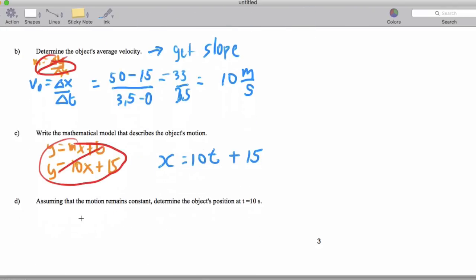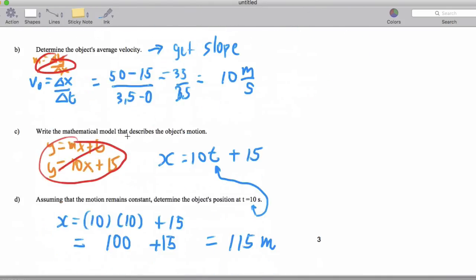Why would we do this? Because it says, assuming the motion remains constant, determine the object's position at 10 seconds. So check this out. We plug in t is 10 into this formula up here. So x is 10 times 10 plus 15, and that's going to give me 100 plus 15. So in 10 seconds, the car ends up at 115 meters away from the origin. Okay. There we go.